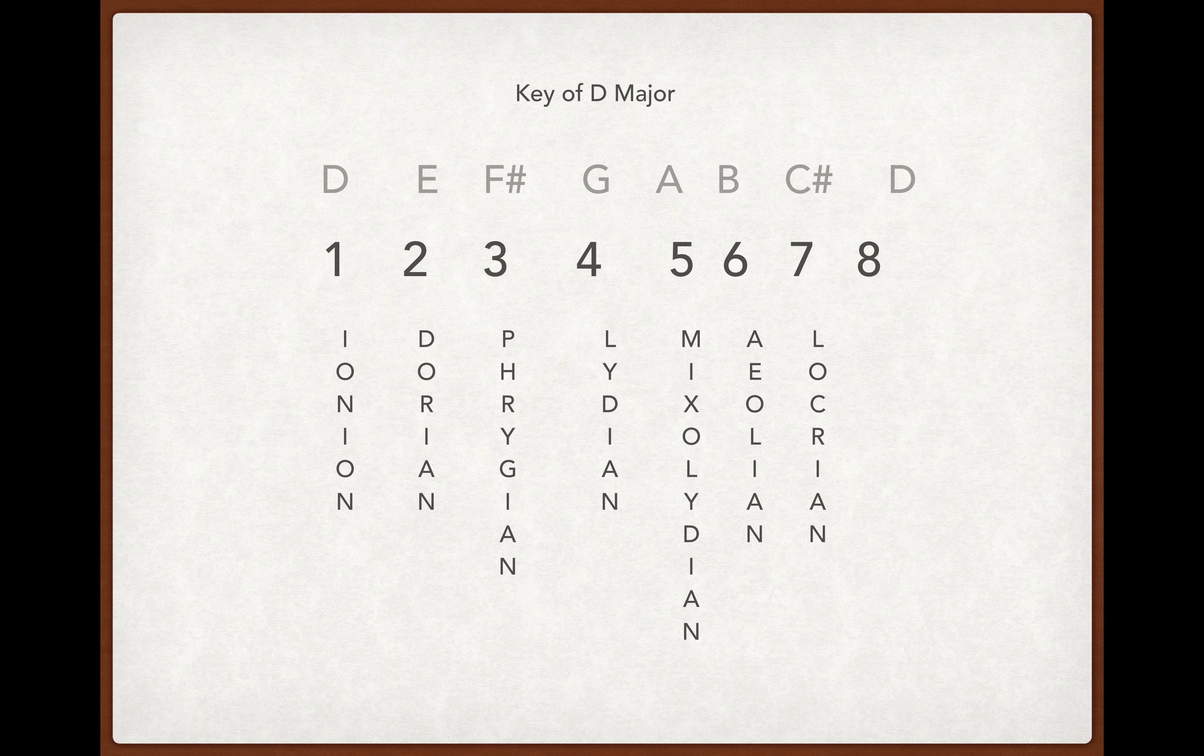And then finally back to D. Don't forget that D is Ionian in this case, and B is Aeolian or B minor in this case.